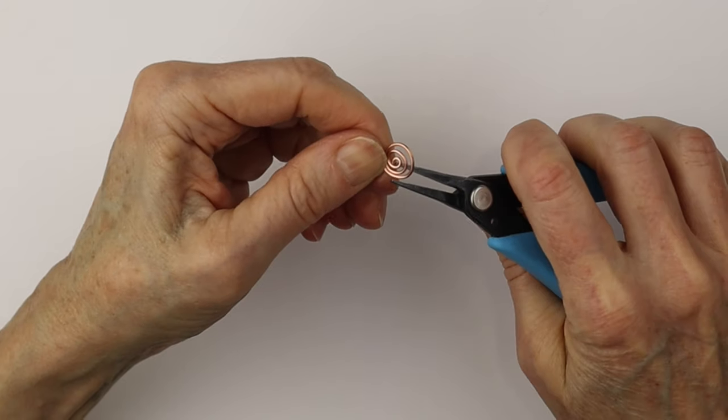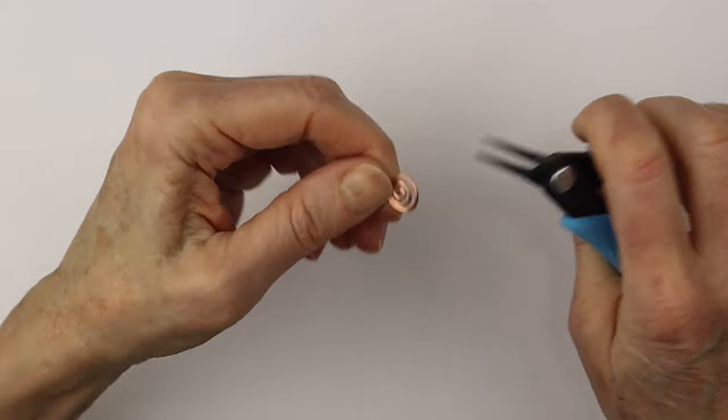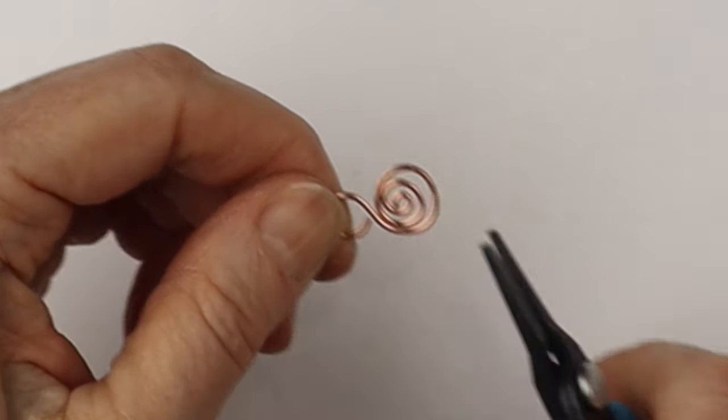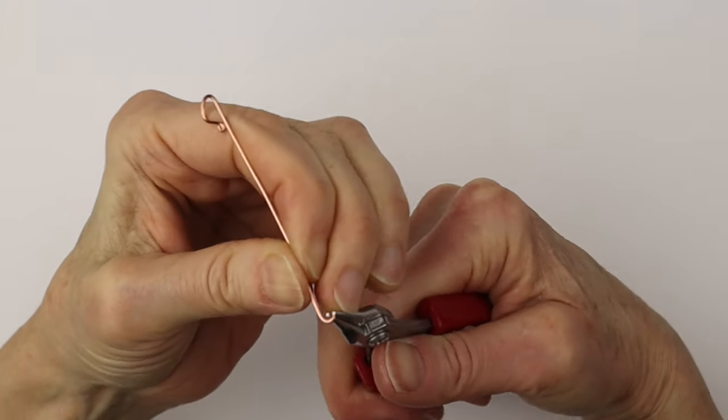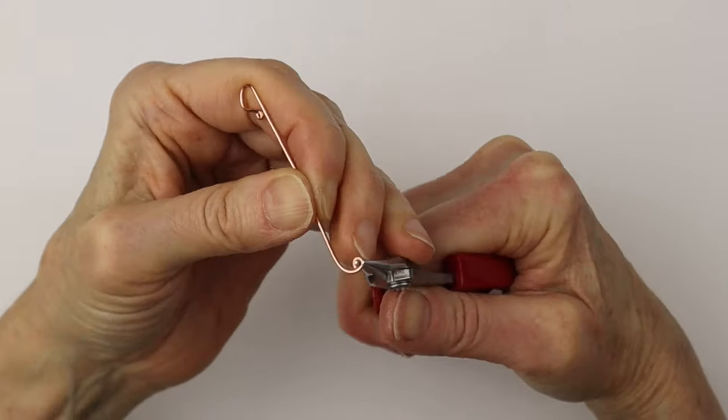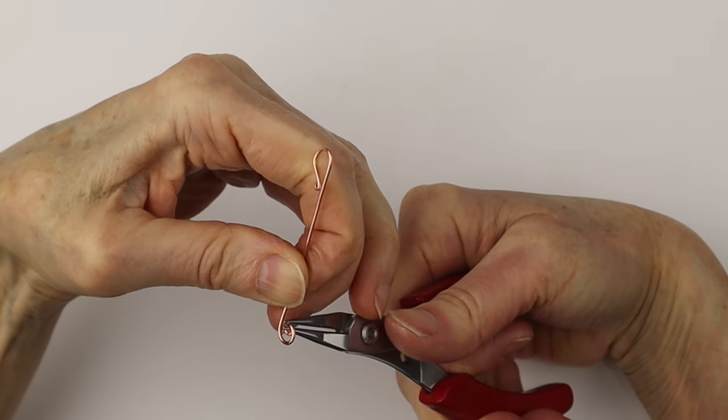With the flat pliers do any little adjustments that you need to make sure it's even. There's a little space in there you need to hold a jump ring later. Now we're going to do the spiral on the other side.